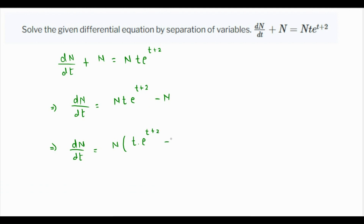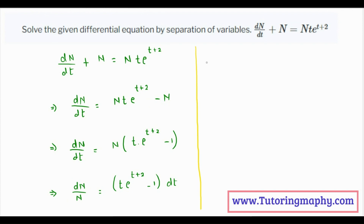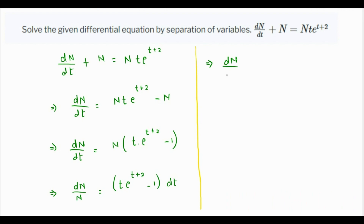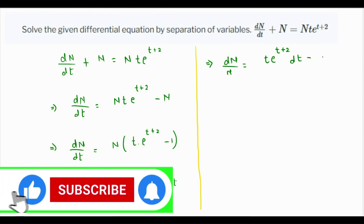This can be rewritten as dn/dt equals n times the quantity t times e raised to t plus 2 minus 1. Now the variables can be separated. We do a cross multiplication — n goes to the denominator on the other side and dt goes to the other side. Opening up the parentheses, we get t times e raised to t plus 2 dt minus dt.